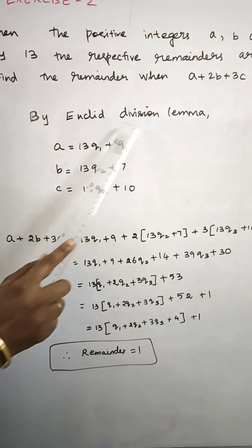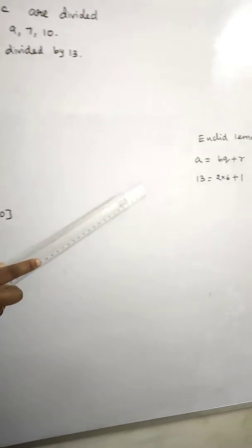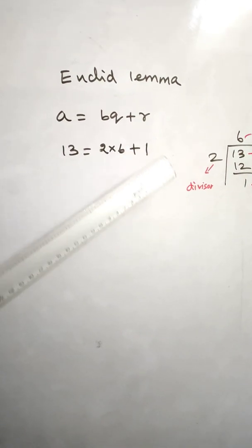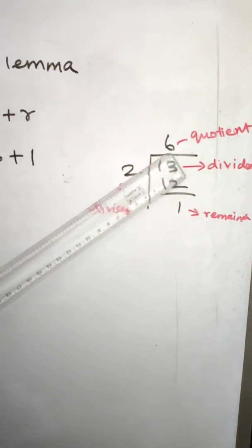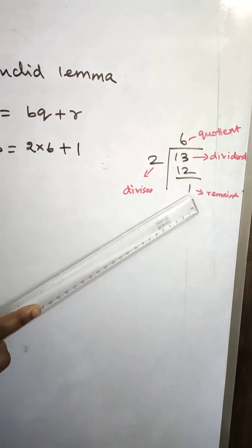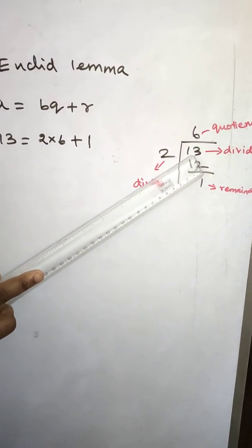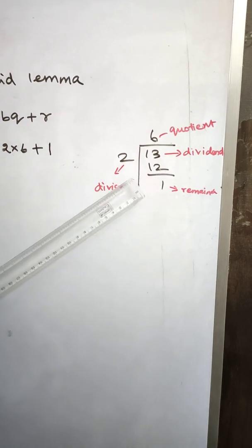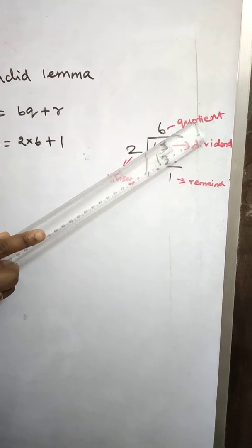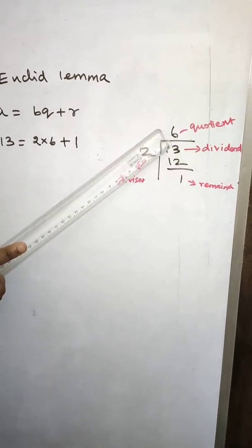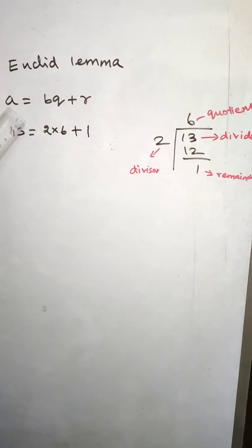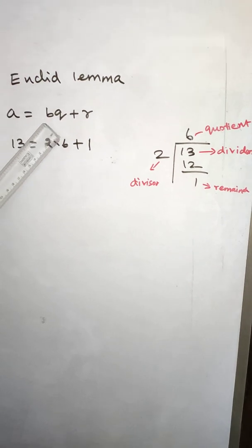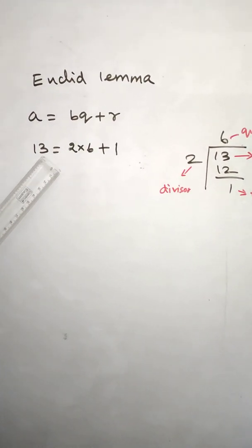So by Euclid division lemma, Euclid division lemma is a is equal to bq plus r. For example, if 13 is our number to divide, 6 times 2 is 12, remainder 1 is equal to 1. So this thing is a dividend, this is divisor, we will see the quotient remainder. Q is a quotient, r is a remainder.